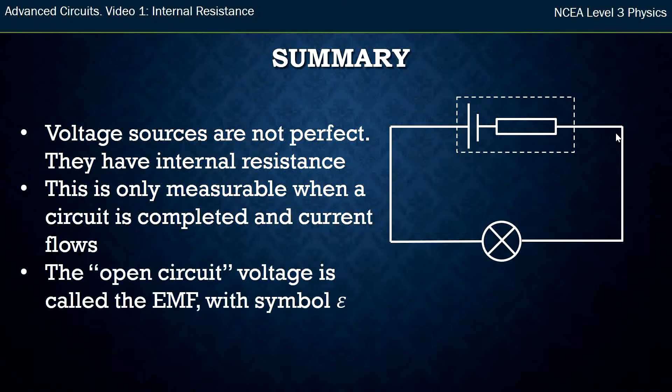So the open circuit voltage is called your EMF. It has the symbol epsilon. And we can write this equation, which I see as an energy equation. What's supplied is the EMF, and it's split between the internal resistor and the light bulb.